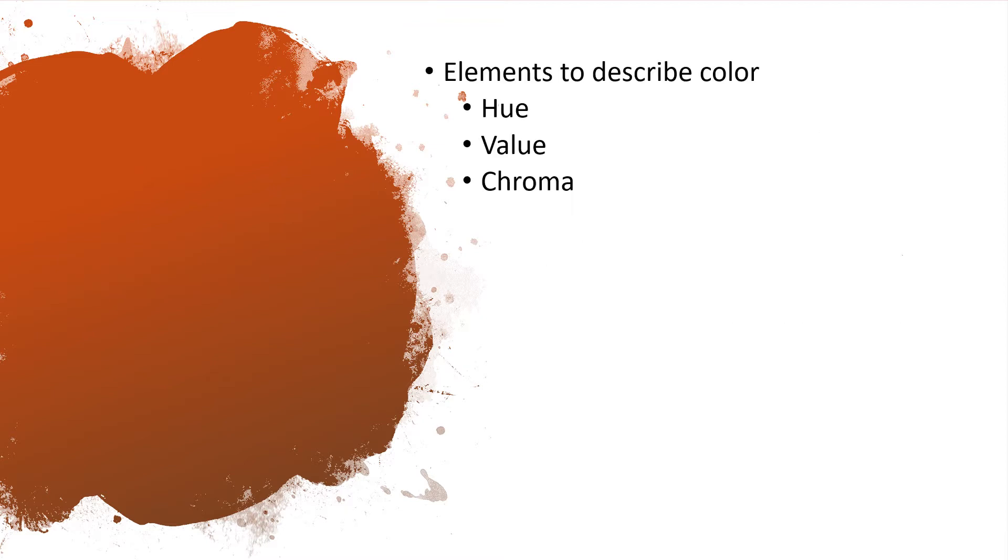Usually in here we consider three major elements, which is called hue, value, and chroma. So hue talks about the color, the basic color, could be yellow, red, or green. It identifies the basic color as well as the in-between color, like yellow-red. So it's like an in-between color.